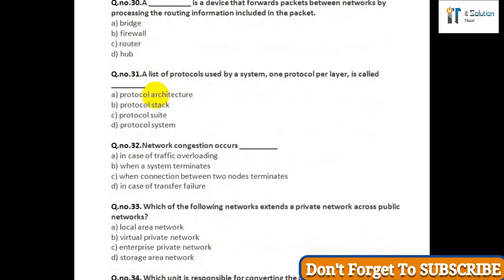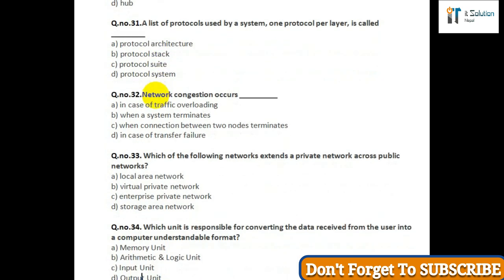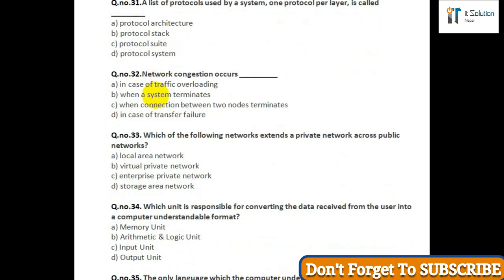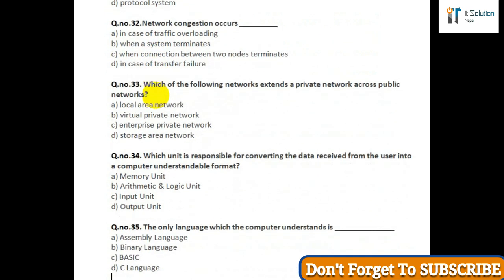Question number thirty-three: Which of the following networks extends a private network across a public network — option A: local area network; option B: virtual private network; option C: enterprise private network; option D: storage area network. Question number thirty-four: Which unit is responsible for converting data received from the user into a computer-understandable format — option A: memory unit; option B: arithmetic and logic unit; option C: input unit; option D: output unit.